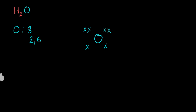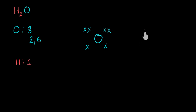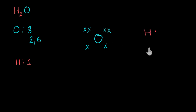Now let's come to hydrogen. Hydrogen's atomic number is one, which means it has only one electron in its outermost shell. So its electron dot structure is H with one dot. I'm using a dot to represent the electron of hydrogen — you can use cross or dot interchangeably. Since there are two hydrogens, I'm going to show two hydrogen atoms here.